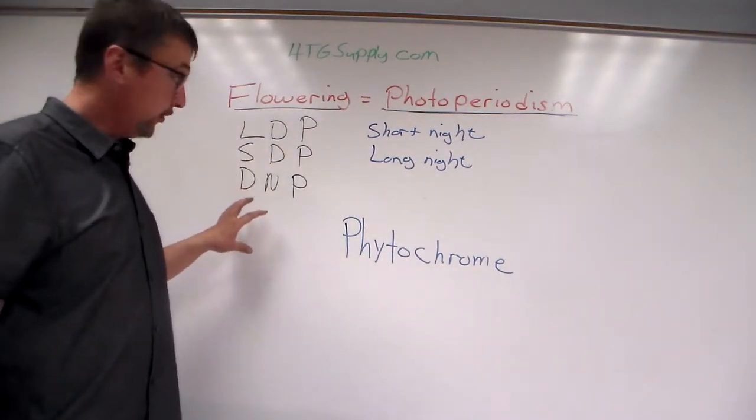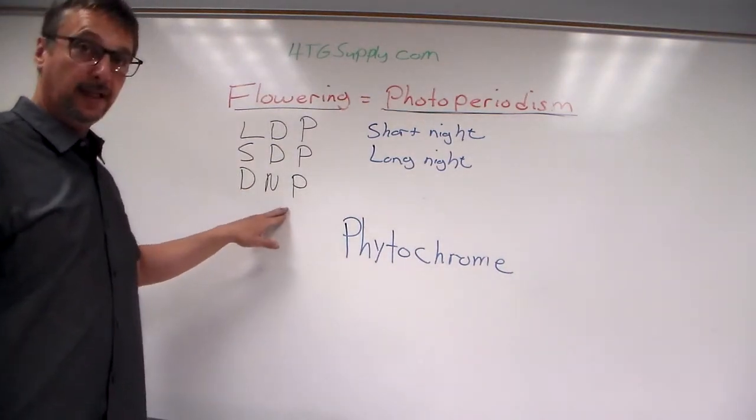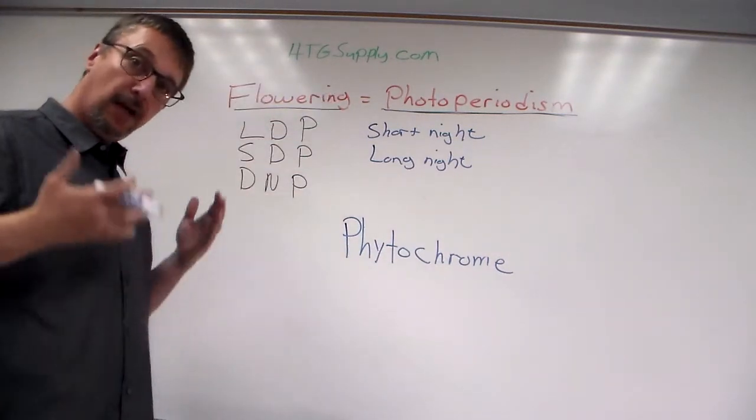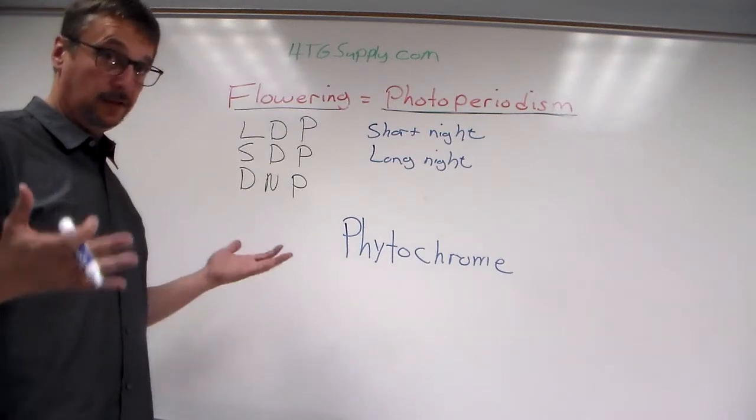There are still other plants that are called day neutral plants. These are plants like tomatoes and corn. You can't really alter their flowering time. They flower when they're a certain size and that's just how it goes.